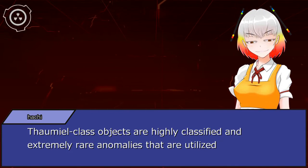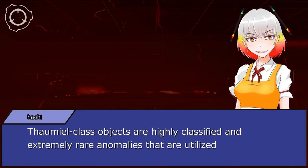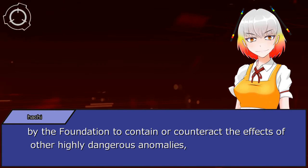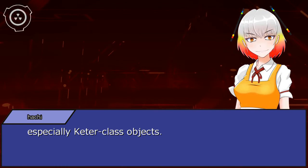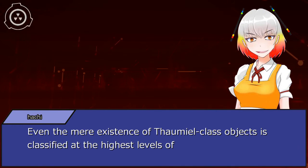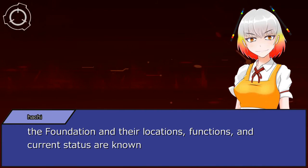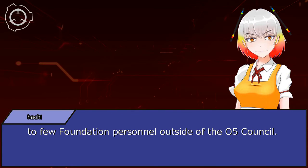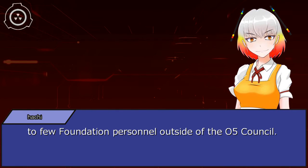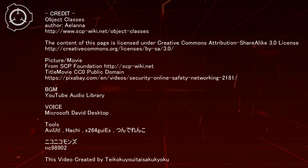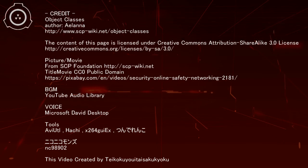Thaumiel-class objects are highly classified and extremely rare anomalies that are utilized by the Foundation to contain or counteract the effects of other highly dangerous anomalies. Even the mere existence of Thaumiel-class objects is classified at the highest levels of the Foundation, and their locations, functions, and current status are known to few Foundation personnel outside of the O5 Council.